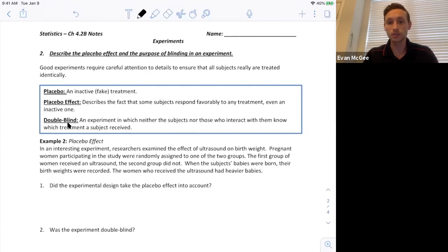So what we do is we implement blind treatments or we implement blindness to help take into account this placebo effect. So a double blind experiment is an experiment where neither the subjects nor the people who interact with them know which treatment is being received. So let's take a look at an example.